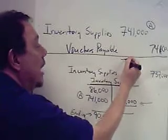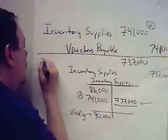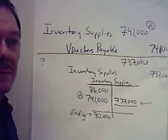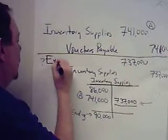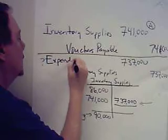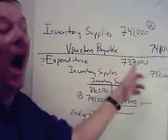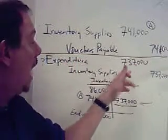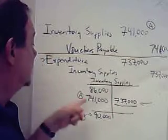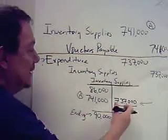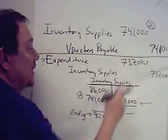The journal entry must balance at $737,000. What's the debit going to be? An expenditure account. This completes our journal entry — we're realizing the expenditure account for all of the supplies used during the fiscal year. We credit the inventory supply account and debit the expenditure account.